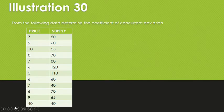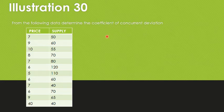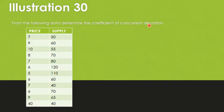Let's move on to a problem. From the following data, determine the Coefficient of Concurrent Deviation. The data includes Price and Supply values, and we have to find the Coefficient of Concurrent Deviation.